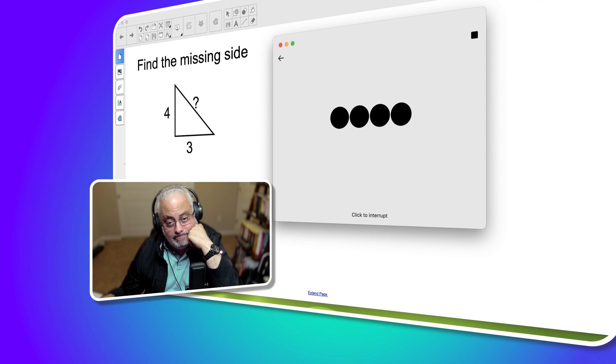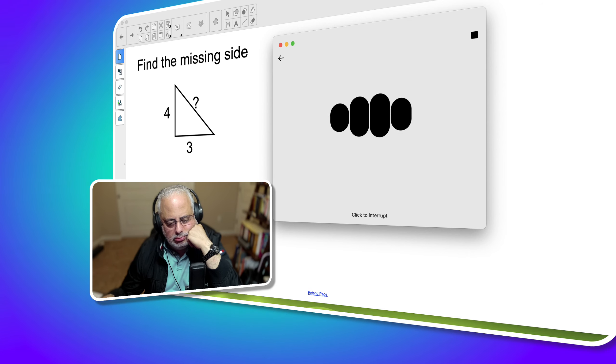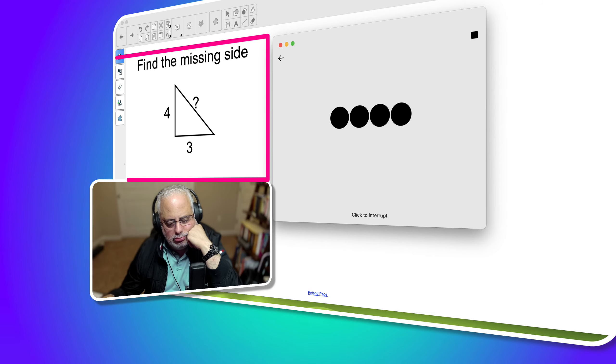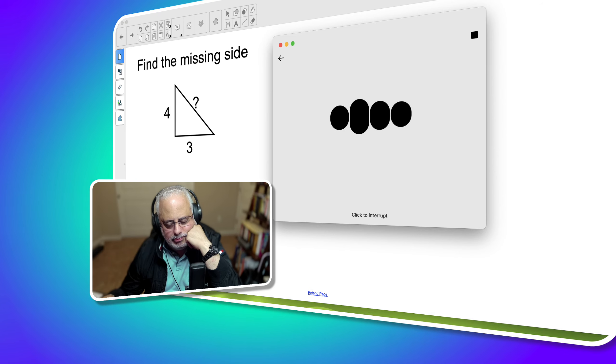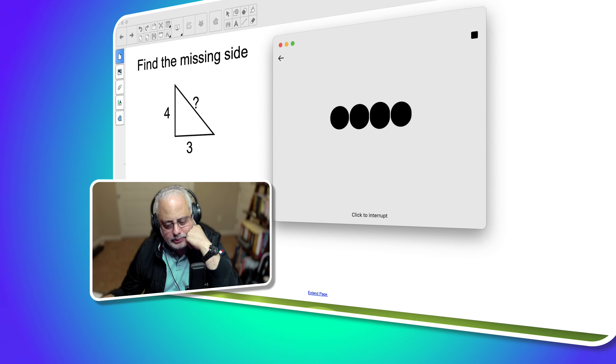Of course. To find the hypotenuse of a right triangle when the legs are given, you use the Pythagorean theorem, which states a² plus b² equals c². Here, a and b are the lengths of the legs, and c is the length of the hypotenuse. Given a equals 4, b equals 3, plug these values into the Pythagorean theorem. 4² plus 3² equals c².